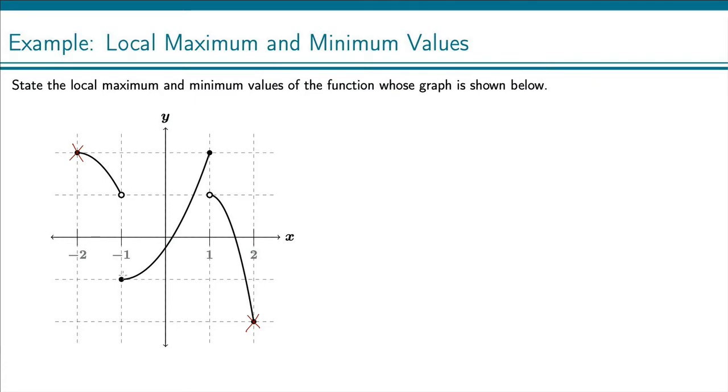Here, this is the function value, and we see that it is lower than the function to the right and lower than the function to the left. So this point right here is going to be a local minimum.